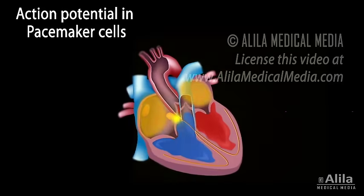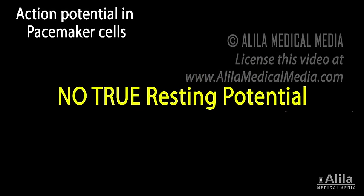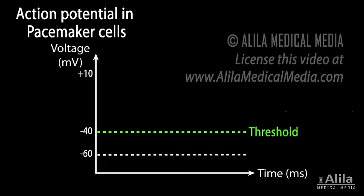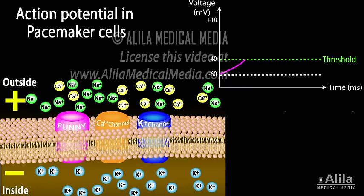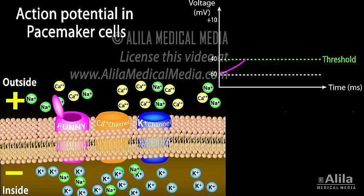The pacemaker cells of the SA node spontaneously fire about 80 action potentials per minute, each of which sets off a heartbeat, resulting in an average heart rate of 80 beats per minute. Pacemaker cells do not have a true resting potential. The voltage starts at about negative 60 millivolts and spontaneously moves upward until it reaches the threshold of negative 40 millivolts. This is due to action of so-called funny currents, present only in pacemaker cells.